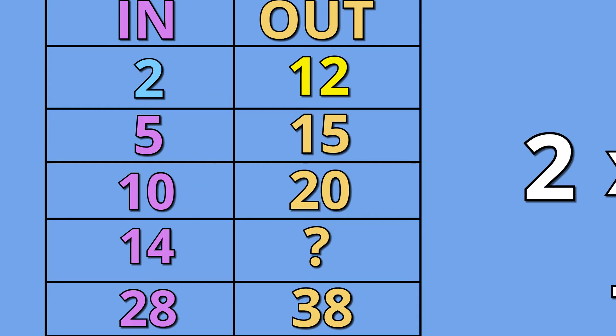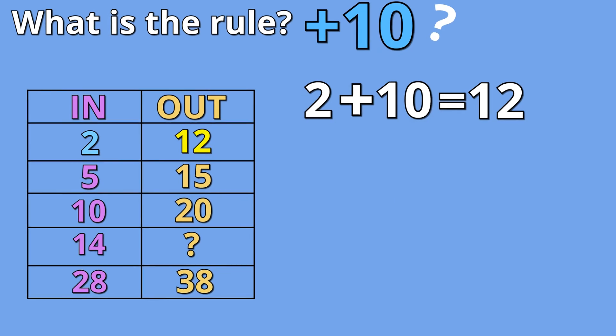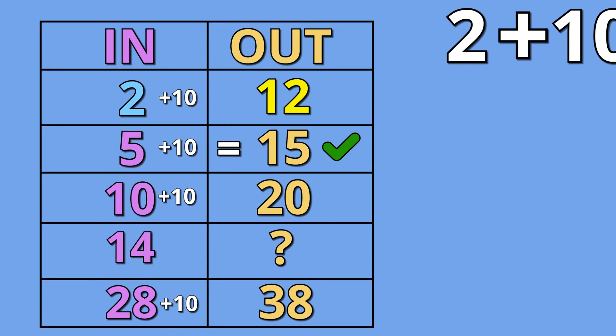Let's now try addition. Two plus one number is equal to 12. We know that two plus 10 is equal to 12. So can plus 10 be our rule? Let's test our rule for all sets of numbers in our table. Five plus 10 is equal to 15. 10 plus 10 is equal to 20. And 28 plus 10 is equal to 38.